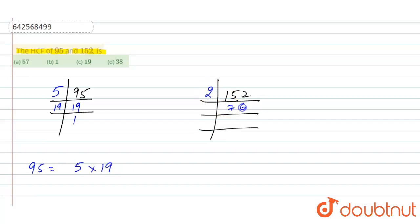Then 2 into 38 is 76, then it's again divisible by 2, so 2 into 19 is 38, and 19 is a prime number, so 19 ones are 19.